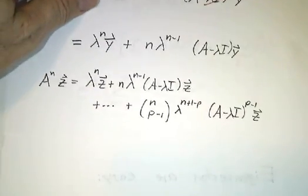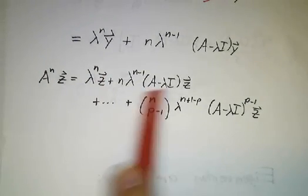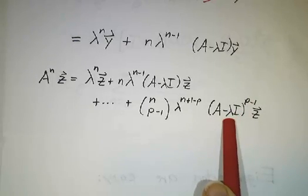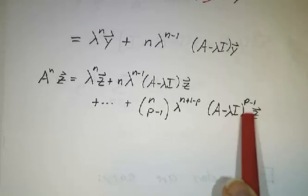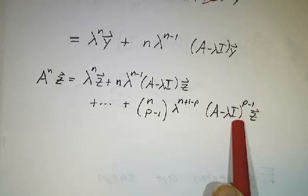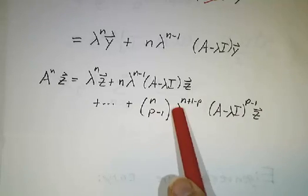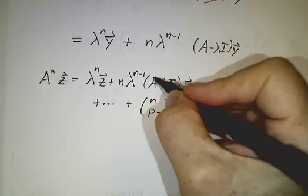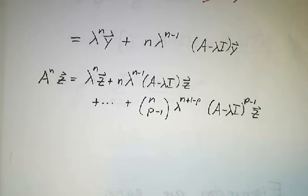If you had a degree p, well, then the first p terms in your expression all the way through the p minus first power of A minus lambda I would work. And anything with p or more powers of A minus lambda I, those would kill z. But the rest would not. And there we have it. No matter how big a power of A you want, you always have p terms and no more than p terms.